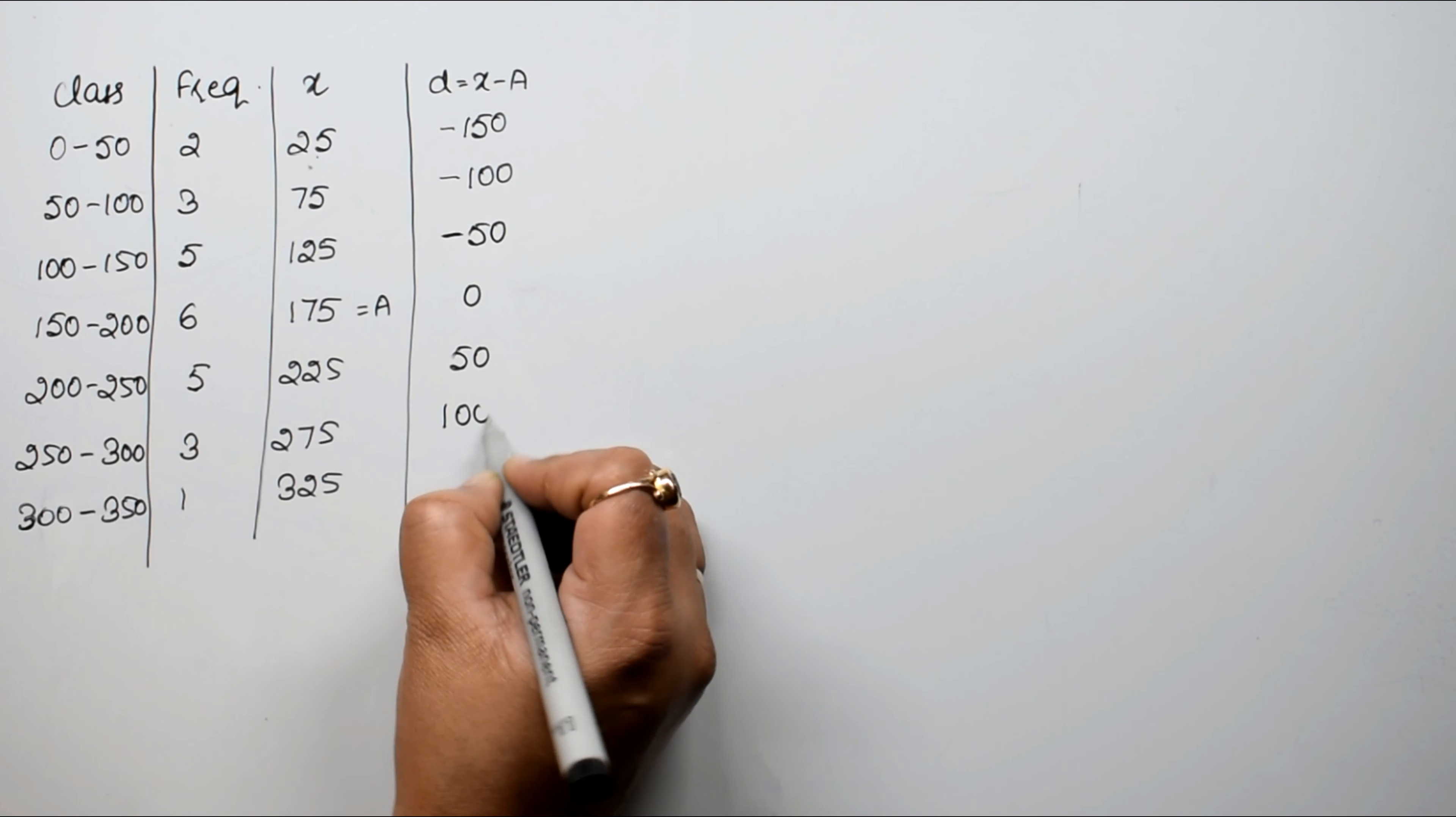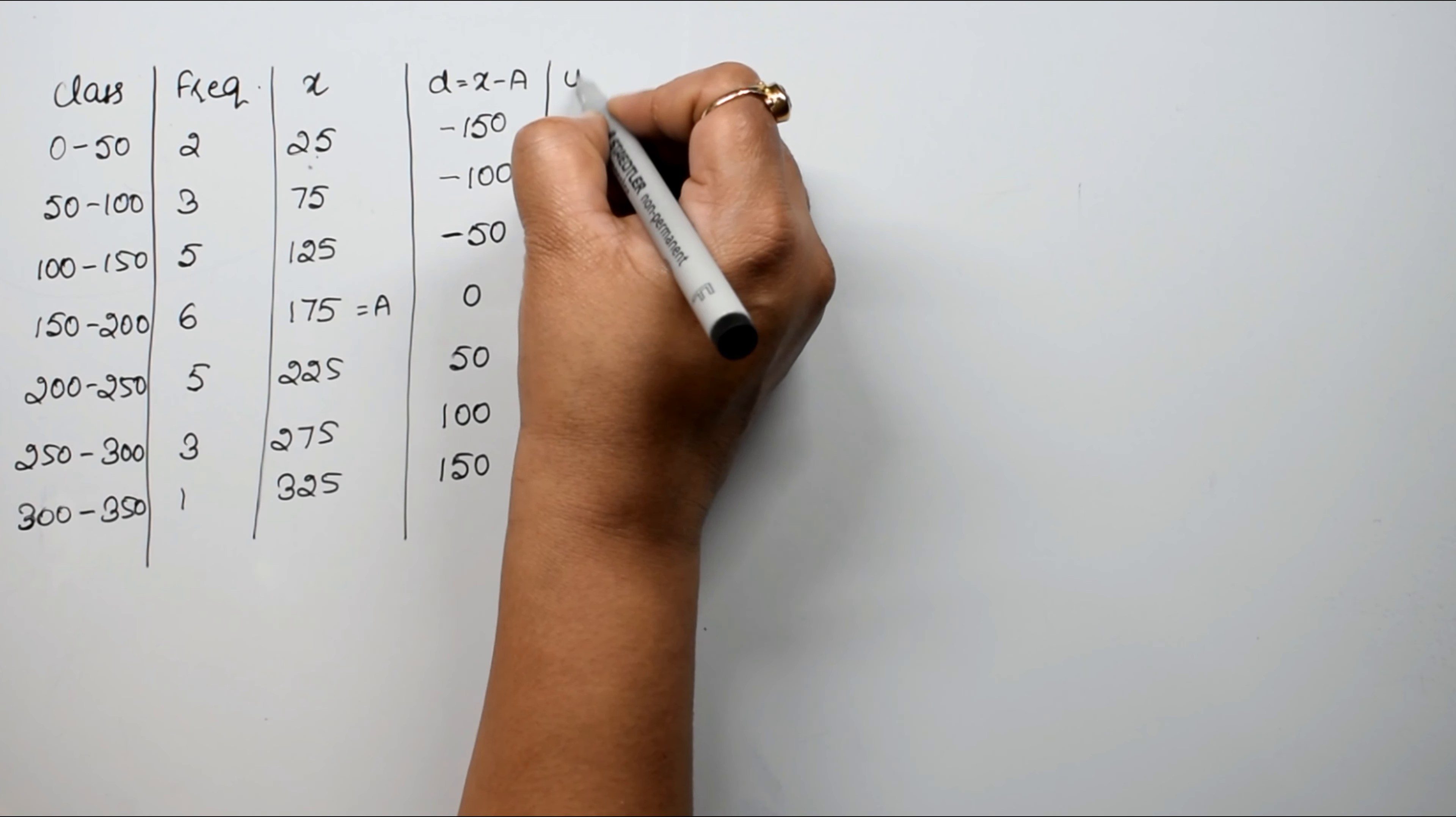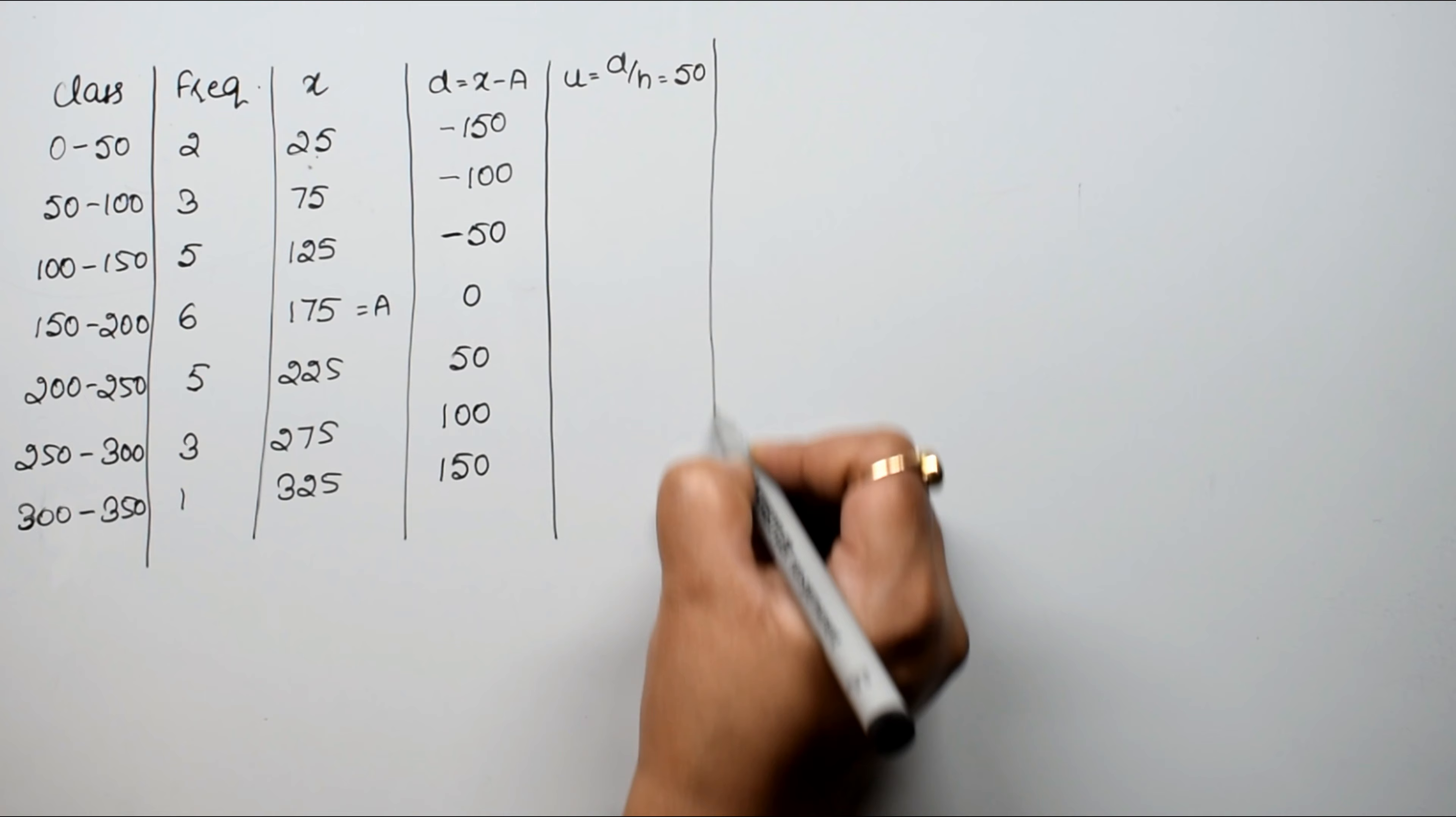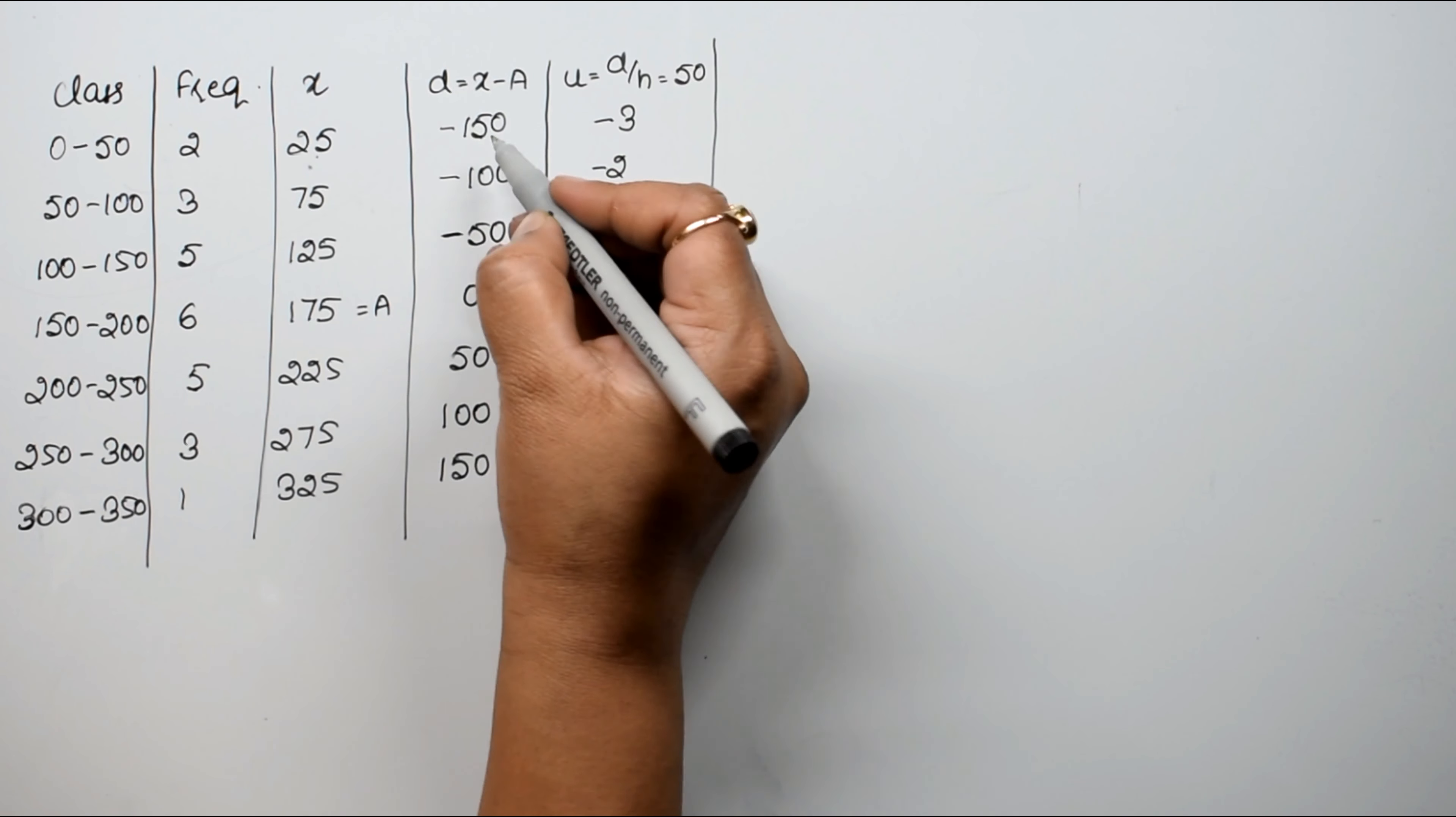50, 100 and 150, right? Now see what is common, our 50 is common. So we have u out of d upon h, which is our 50, right?